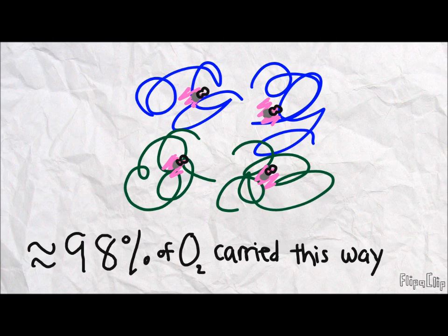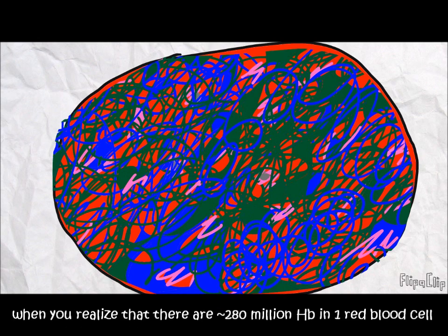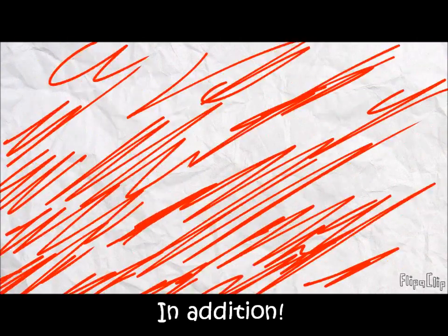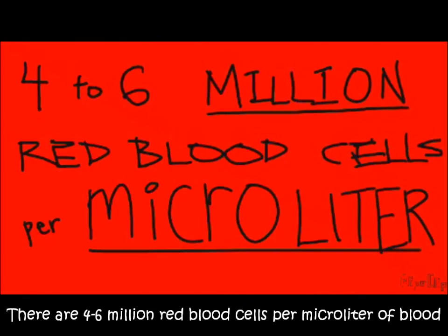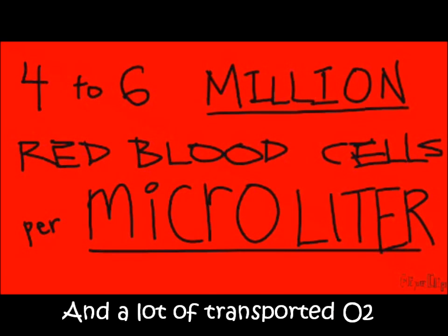98% of oxygen is carried this way. You can imagine that this would be the main transfer method when you realize that there are 280 million hemoglobin in one red blood cell. In addition, there are 4 to 6 million red blood cells in just a microliter of blood. So, that's a lot of hemoglobin and a lot of transported oxygen.